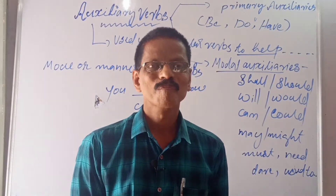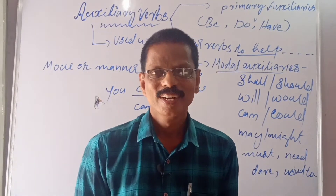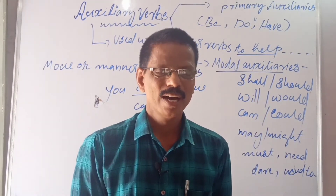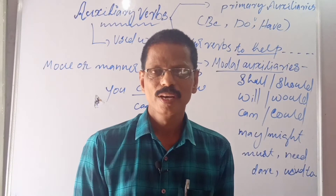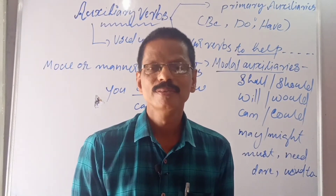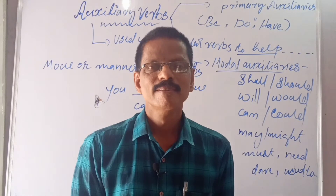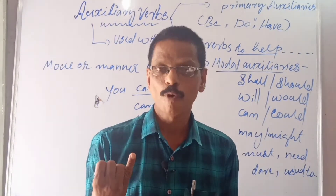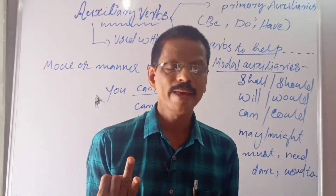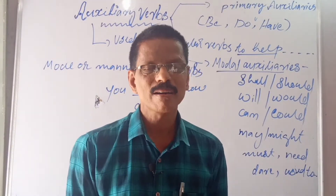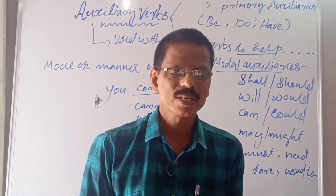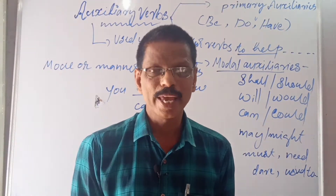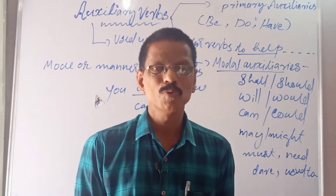Hi friends, good morning, welcome back to SGK English Elementary English Grammar and Spoken English. Last three days, we studied forms of be, then forms of do and forms of have. These three are primary auxiliaries. Auxiliaries are of two types: primary auxiliaries and modal auxiliaries.